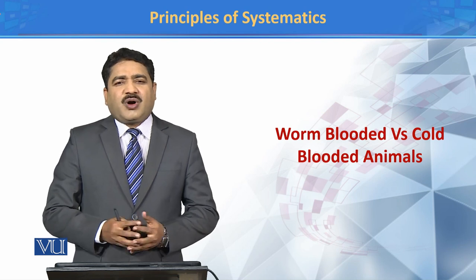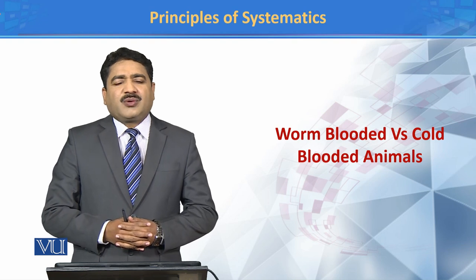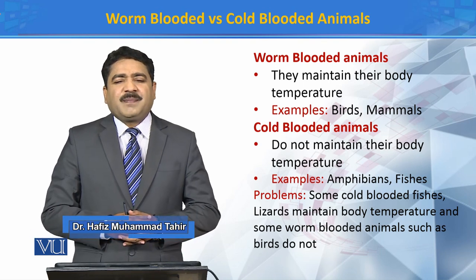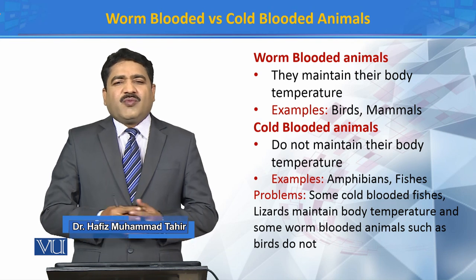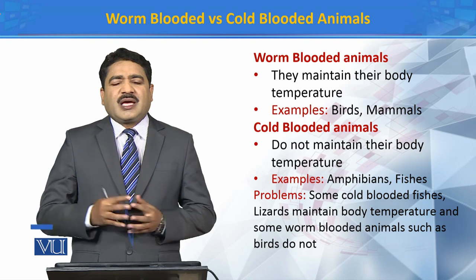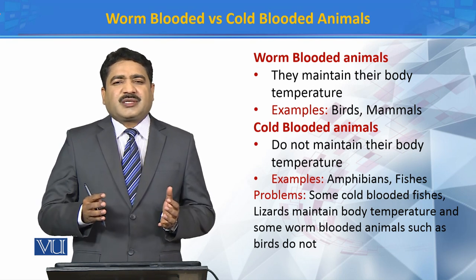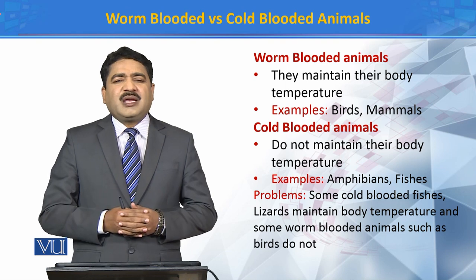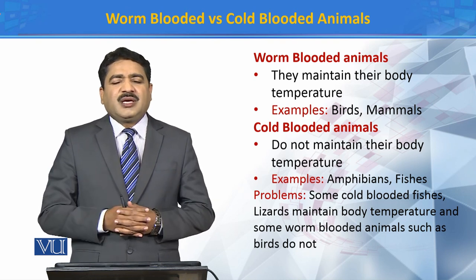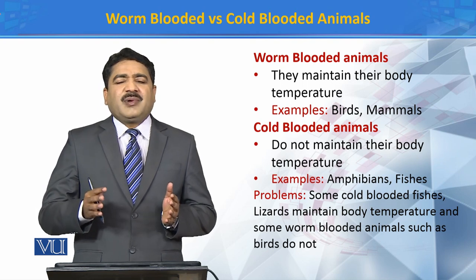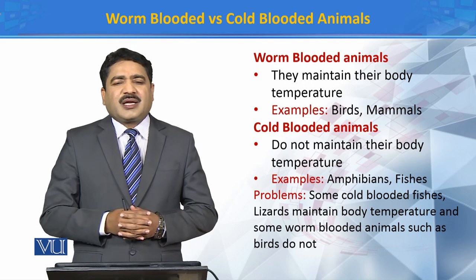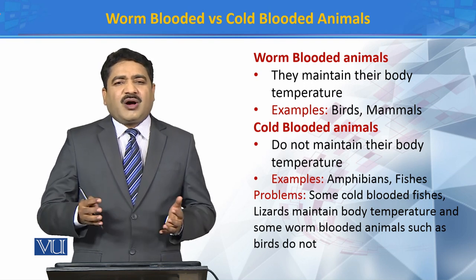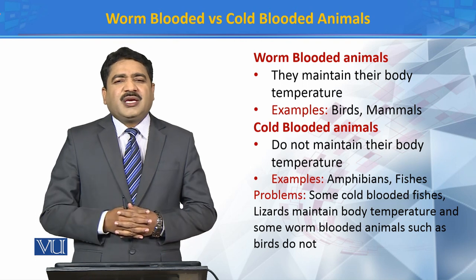Those animals which do not have the ability to regulate their body temperature are known as cold-blooded animals. Animals have two categories: warm-blooded animals and cold-blooded animals. Invertebrates, for example, are cold-blooded animals.